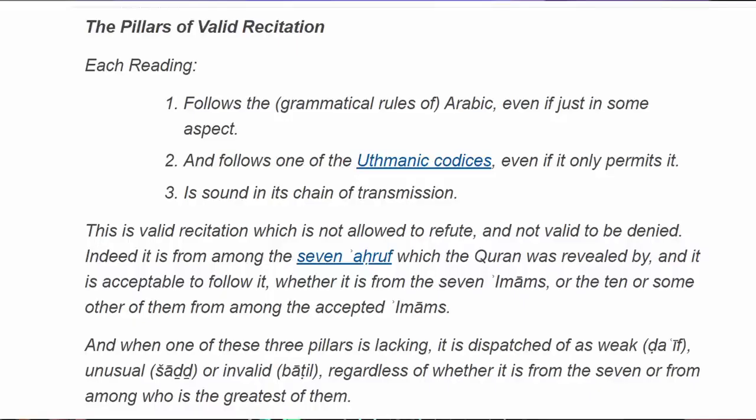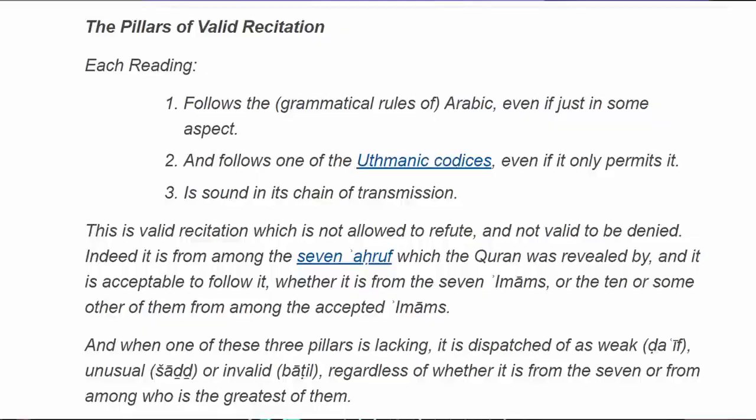Let's see what scholar Maureen Van Putin has to say about this. He has his own blog and published this article in September 2023. Ibn al-Jazari is one of the people who standardised the Qira'at into 10 canonical readings instead of seven in the 15th century. Maureen Van Putin actually translates part of al-Jazari's work where he talks about the requirements for valid canonical Qira'at readings — he translates it as 'The Pillars of Valid Recitation.'